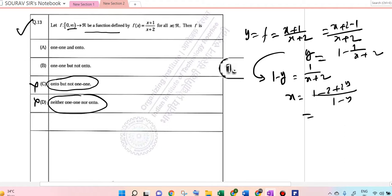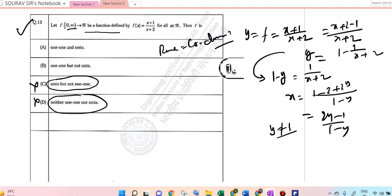So 2Y-1 divided by 1-Y. As Y not equal to 1, this structure is obviously here. So range equals codomain. Assimilating these things together, we can say that it's one-to-one but not onto. That's the correct answer.